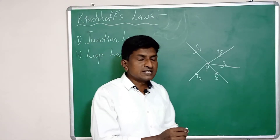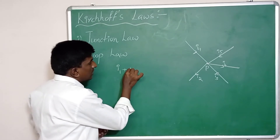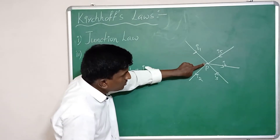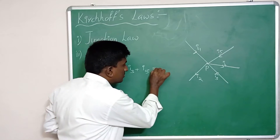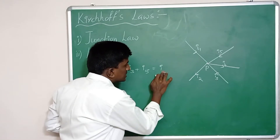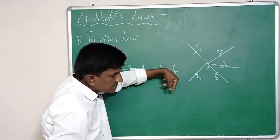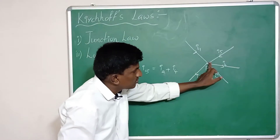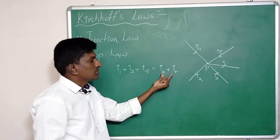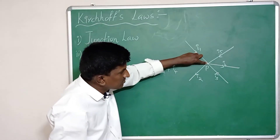According to the junction law, the sum of currents into the junction — i1 plus i3 plus i5 — equals the sum of currents moving out from the junction — i2 and i4. The arrow marks indicate the direction of current flow, showing which currents are moving out from the junction.